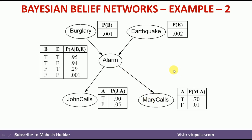The complete problem description is given in example number one and I have solved two questions over there. The first question deals with how to calculate the joint probability distribution of this network given all the events. The second one is how to calculate the probability distribution given a subset of events — for example, if only one or a subset of events were given, how to calculate the probability values.